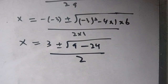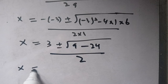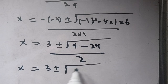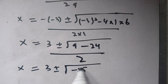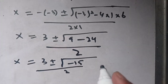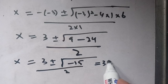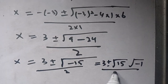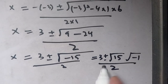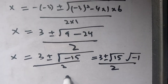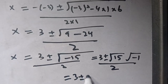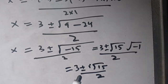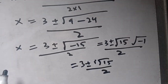We have x equals 3 plus or minus square root of minus 15, divided by 2. We can write this as 3 plus or minus square root of 15 times square root of minus 1, divided by 2. Since the square root of minus 1 equals iota, this becomes x equals 3 plus or minus iota times square root of 15, all divided by 2.